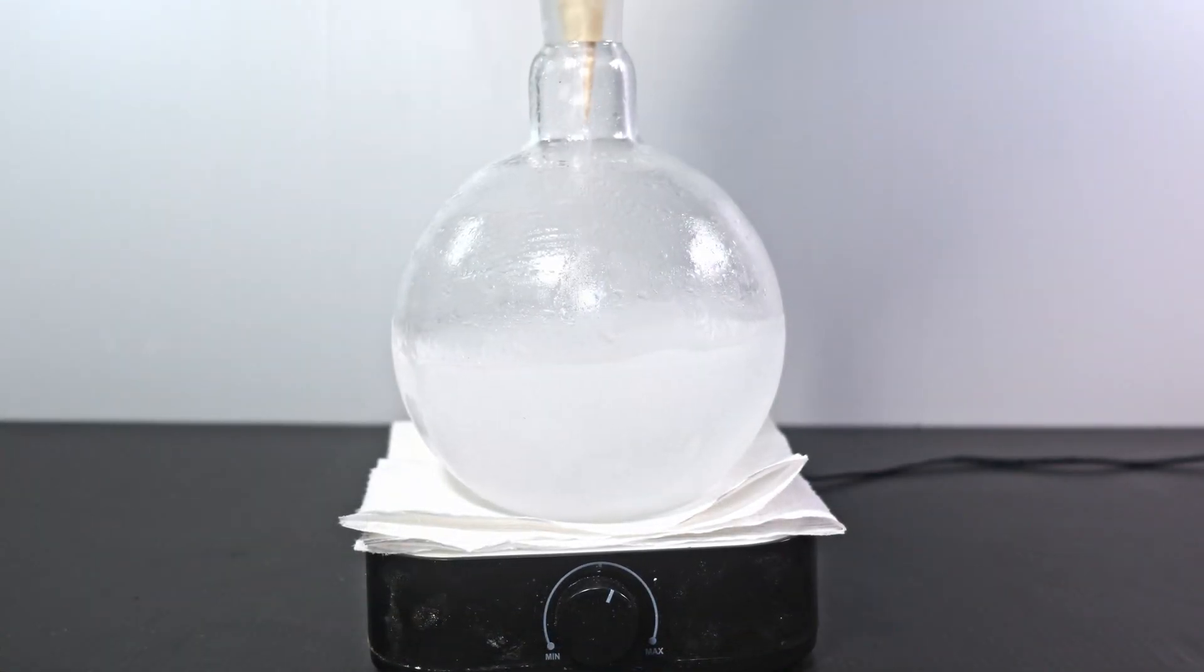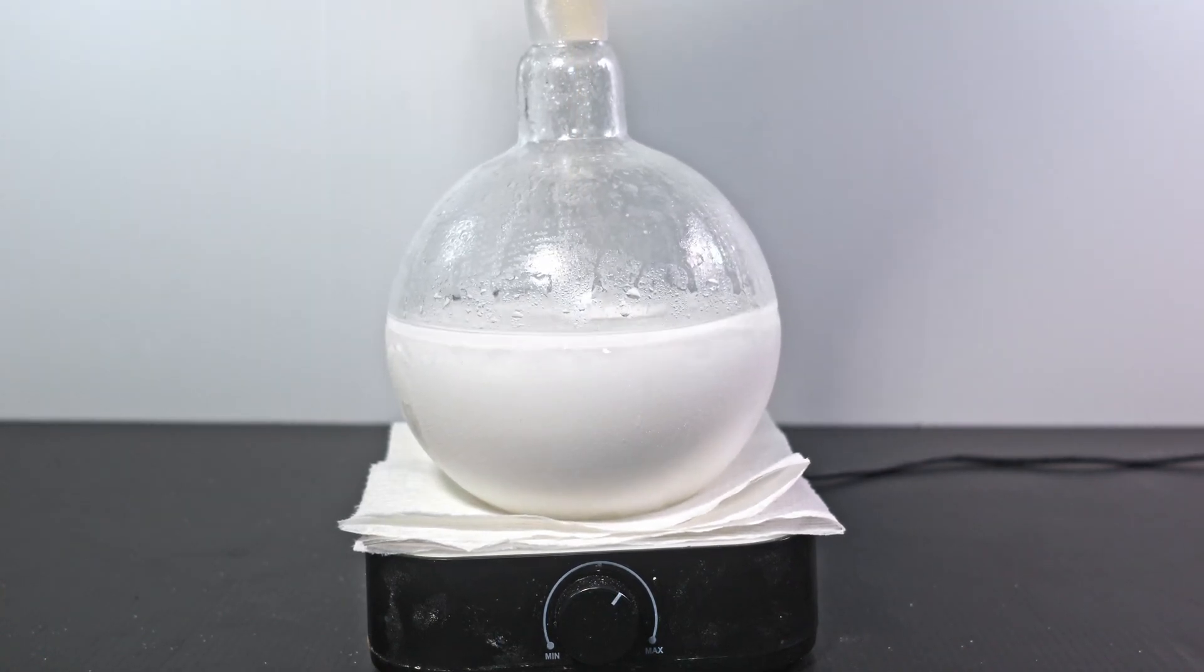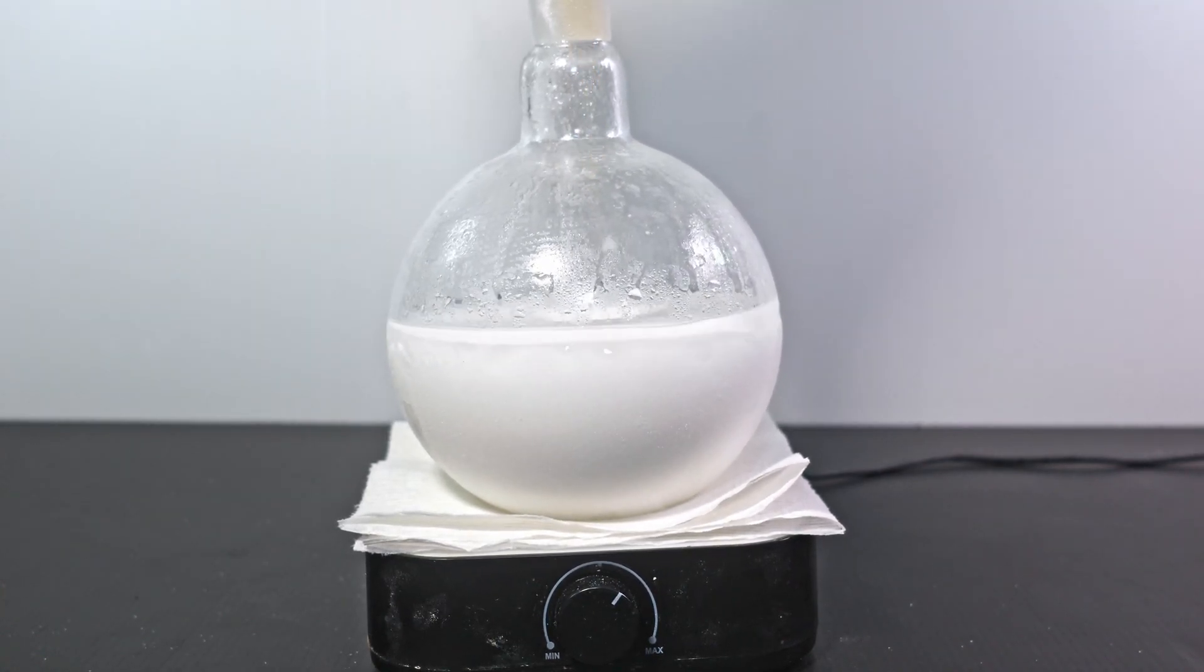Once I get it stirring, I start to add in my sodium bromide. It is important to have the stirring high so the sodium bromide does not settle which will seize the whole mixture and significantly decrease the rate of reaction.